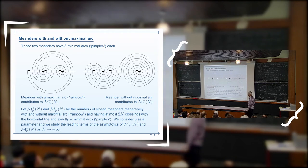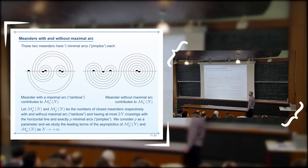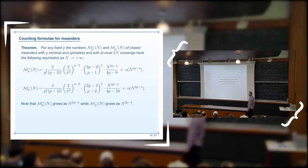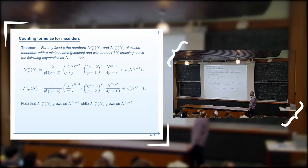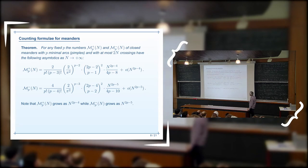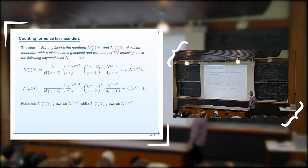The number of meanders with the rainbow — the maximal arc — is a polynomial in n, where 2n is the number of crossings, of this degree, with an explicit formula for the coefficient. When there is no maximal arc, it is also polynomial in n, but the power is one unit less. It might seem surprising that the number of meanders with the maximal arc is larger, since we appear to have added an extra constraint, but in reality we added a black arc equivalent to the others on the sphere.